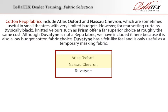However, for rear setting curtains — typically black — knitted velours such as Prism offer a far superior choice at roughly the same cost. Although duvetyne is not a rep fabric, it is included here because it is also a low-budget cotton fabric choice. Duvetyne has a felt-like feel and is only useful as a temporary masking fabric.